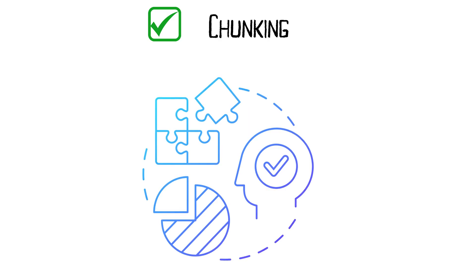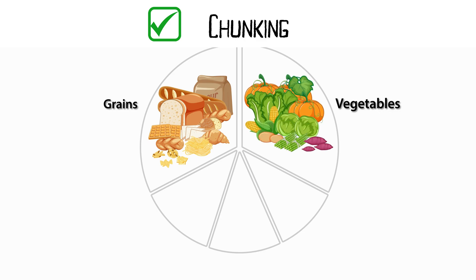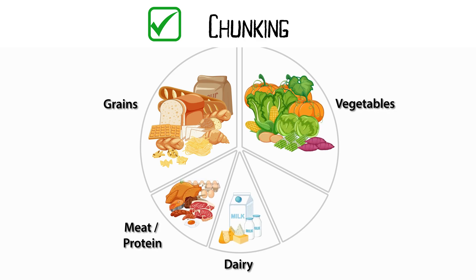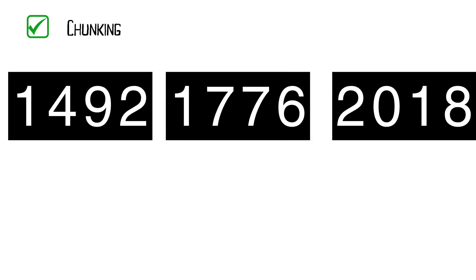It is one of the simplest yet most effective memory techniques. The idea is to break down large pieces of information into smaller, manageable chunks. Our brains find it easier to remember information when it's grouped together. For example, instead of trying to remember a long string of numbers like 1492-1776-2018, it's much easier to remember three dates than one long number.